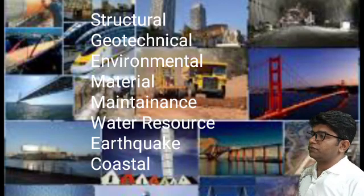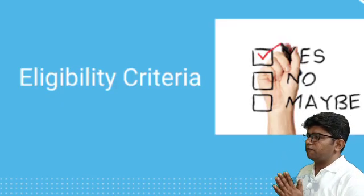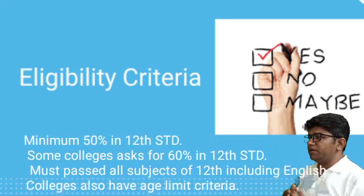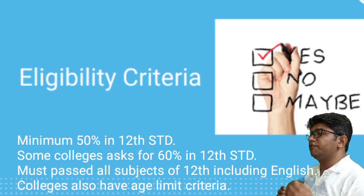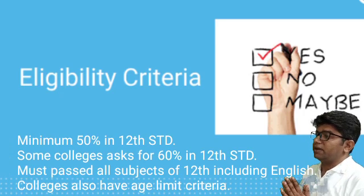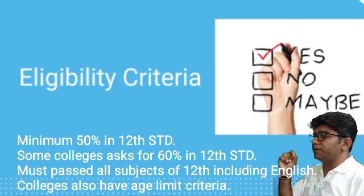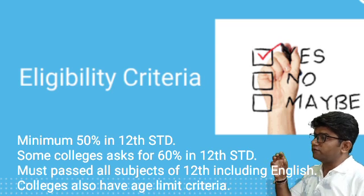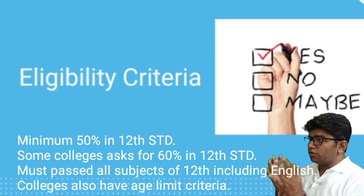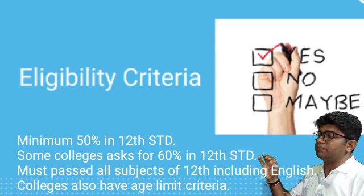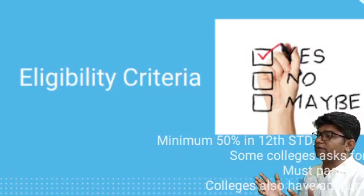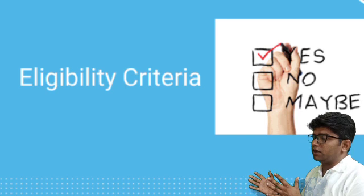All these types of engineering come under civil engineering as major domains, and you can specialize in any one of them. Regarding eligibility for civil engineering college, most colleges require a minimum 50% aggregate in Class 12, with some requiring 60%. You must have passed Class 12 with at least 50% marks including English. Good reputed colleges also look at your JEE score as a minimum eligibility criterion, and some universities have an age limit.